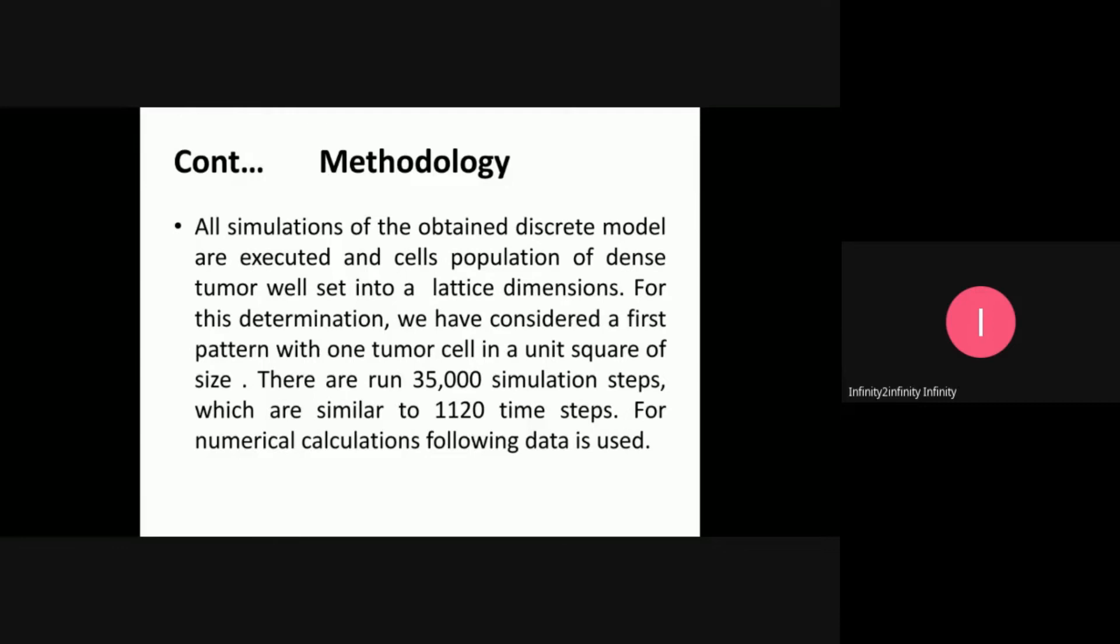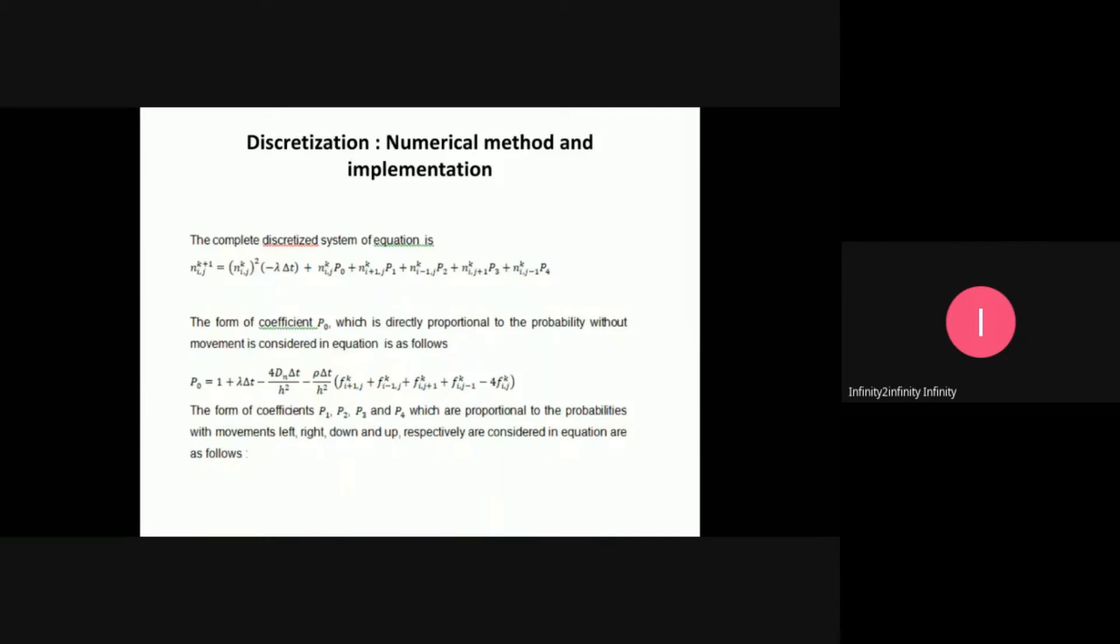In the simulations, the obtained discrete model is executed in MATLAB programming. A population of dense tumor cells is set into lattice dimensions. I used a unit square tumor size, and this simulation code runs for 35,000 simulation steps, which is similar to 1,120 time steps. The data is considered as shown in the next table, and after discretization, I obtained these equations.